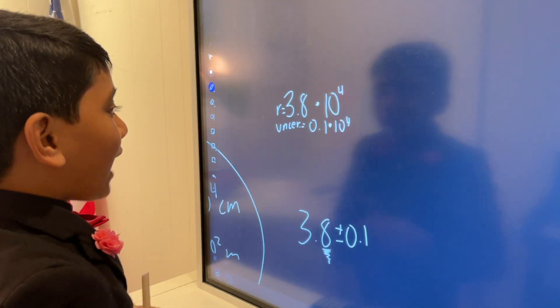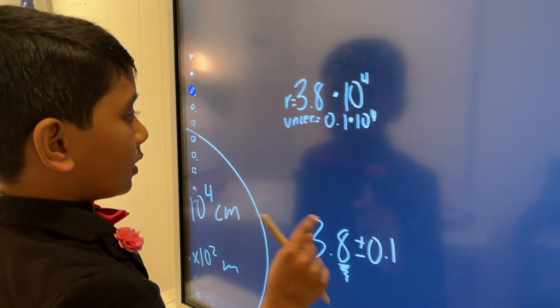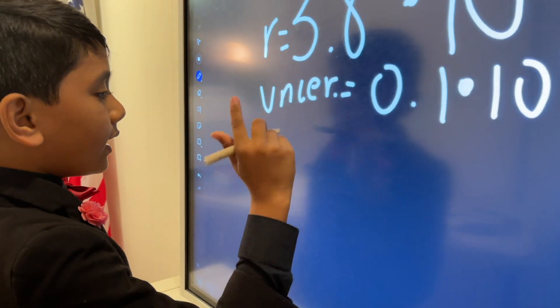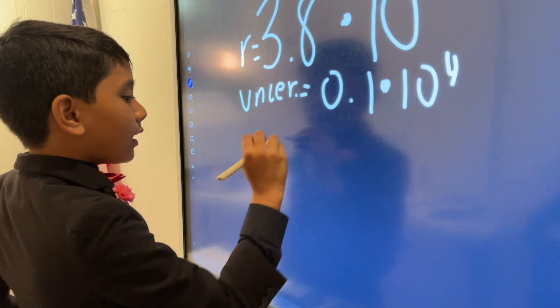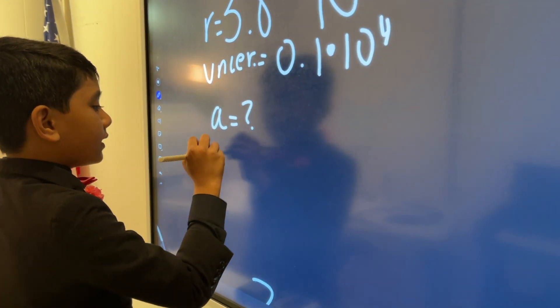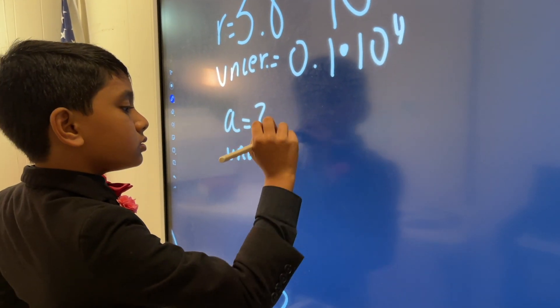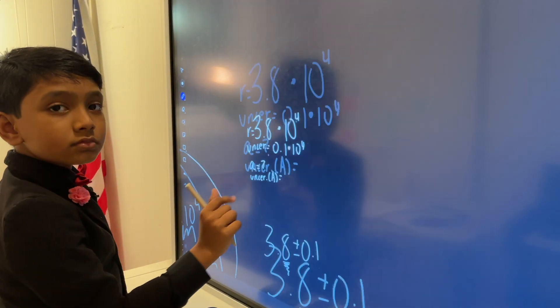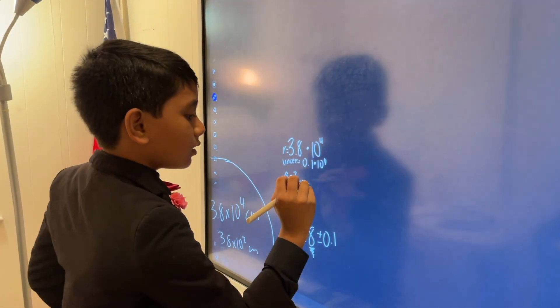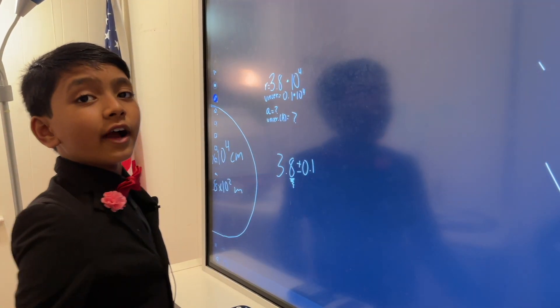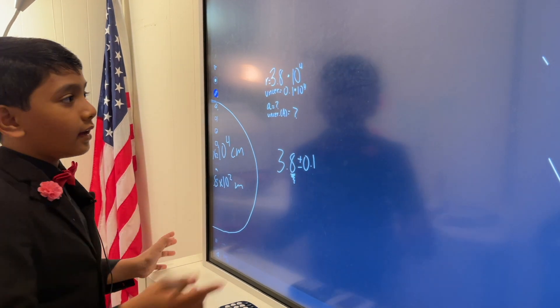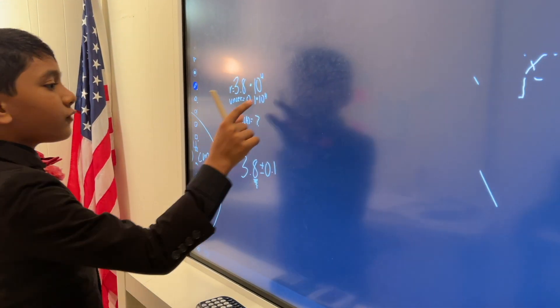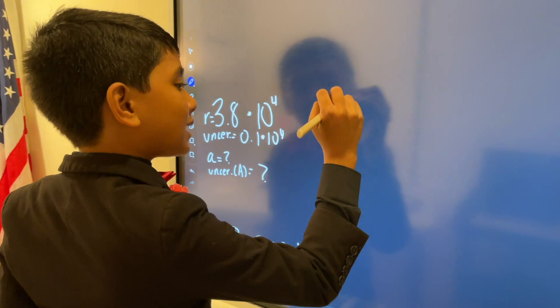let's look at how we can solve this problem. What we want to find is the area and the uncertainty in the area. So, how do we find it? Well, we can find it actually very easily. Now, let's first find the minimum and maximum value.